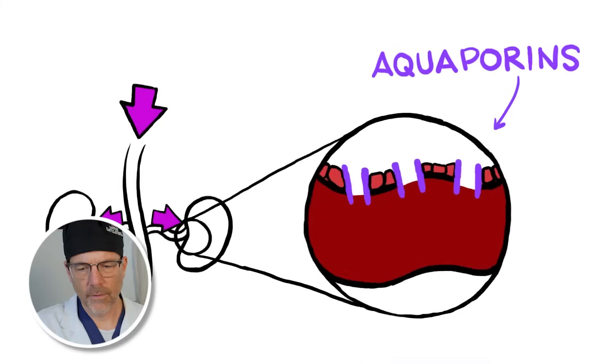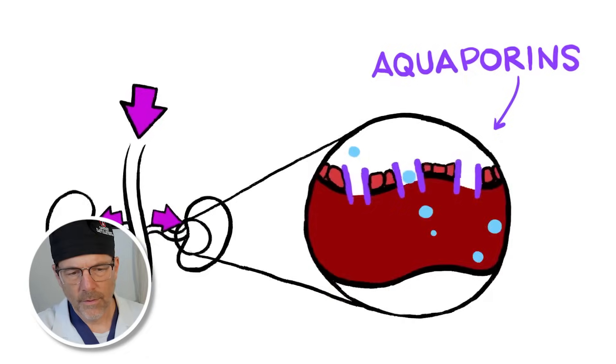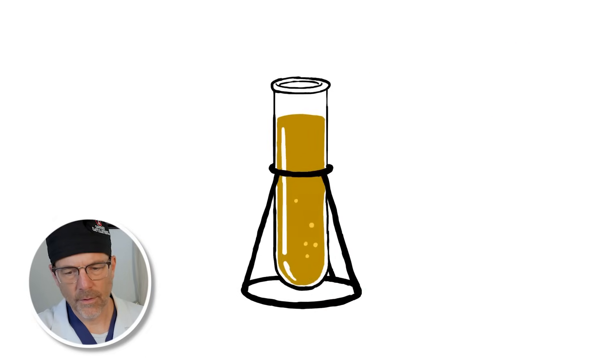When it reaches the kidneys, it creates aquaporins, special channels that enable blood to absorb and retain more water, leading to concentrated dark urine.